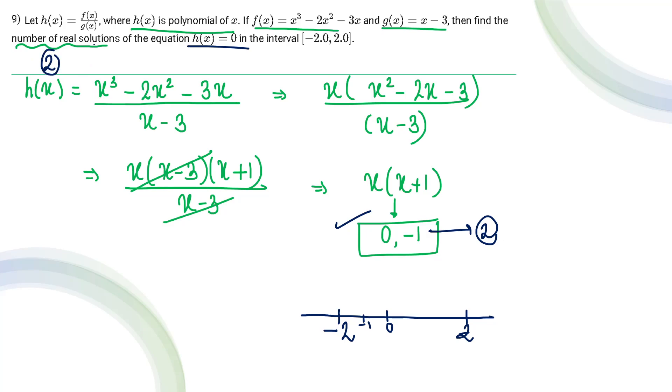So the number of real solutions of the equation h(x) equals 0 which lie in the interval minus 2 to 2 are 2. That's all in this question. If you understood this question then please subscribe to the channel.